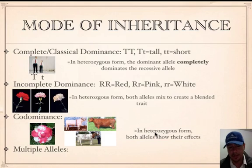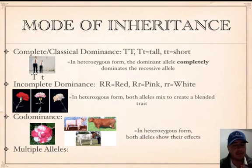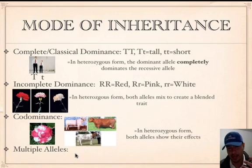Multiple alleles is another example — this is when you have more than two alleles determining a trait. For example, to get green eyes you'd need big A little a big B little b. We're not talking about just two alleles — we're going beyond the regular two alleles.